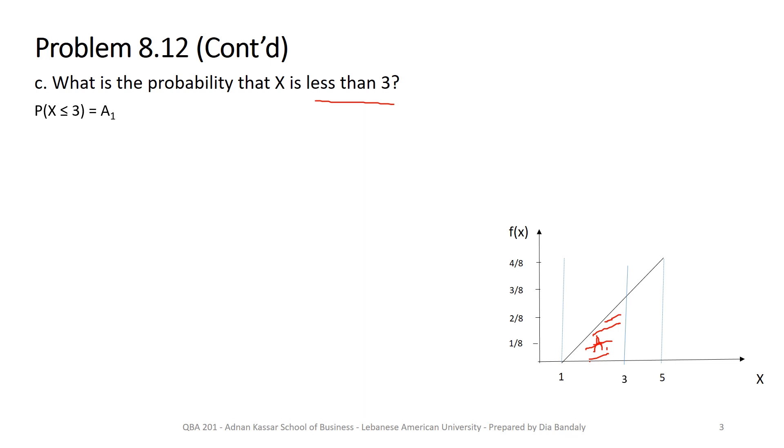So how to find A1? It's very clear for us that this is the area of a triangle that has a base, which is 3 minus 1, that's 2. But I need to find the height. To find the height, I find f(3), because at 3, this line will touch the PDF, and then I find f(3), this will be my height. So f(3) is 3 minus 1 over 8, 2/8. Now I have the height, I have the base. So I find the area.